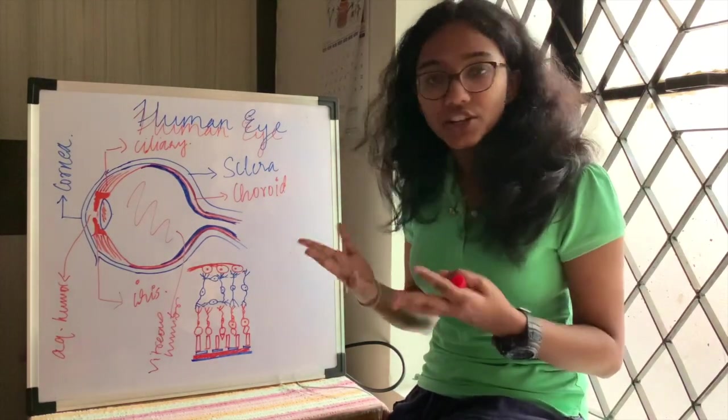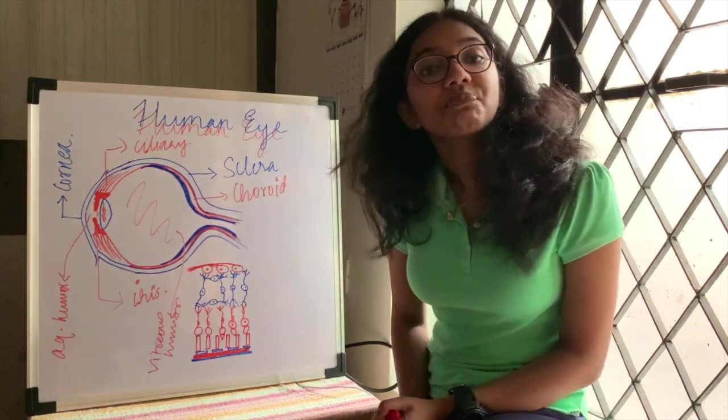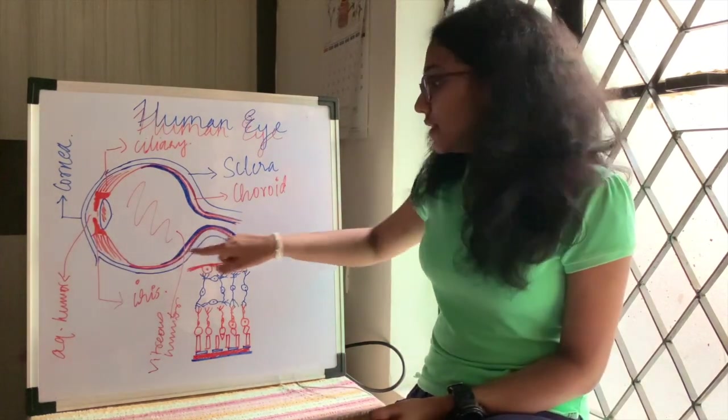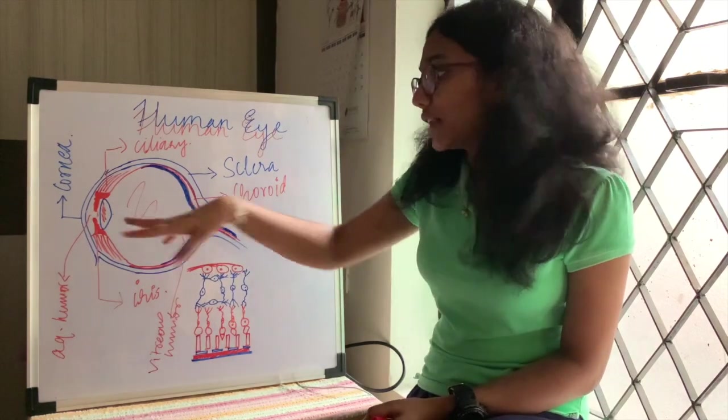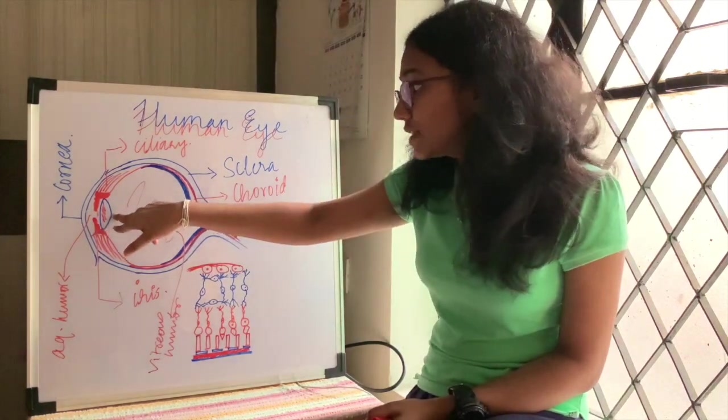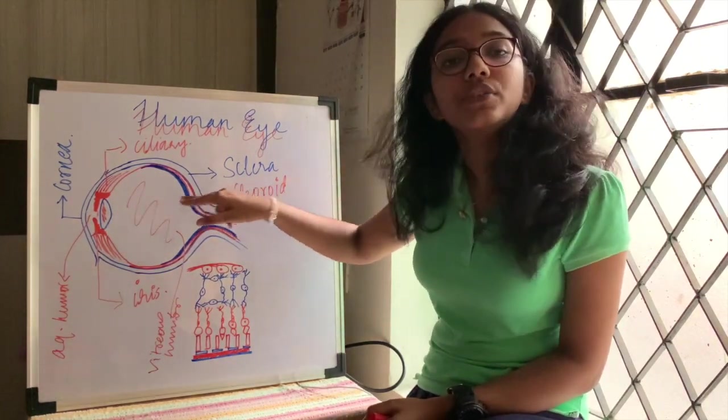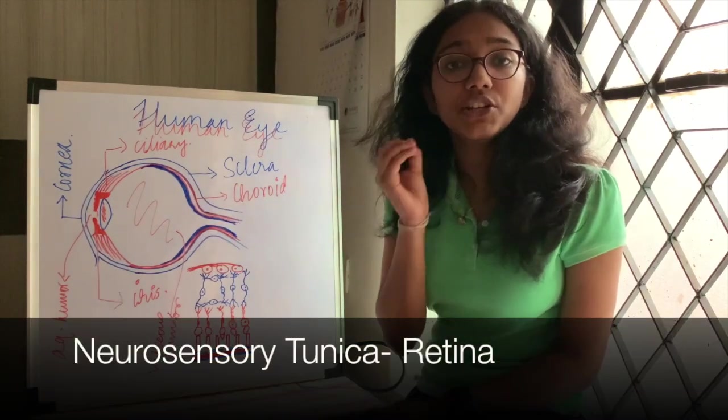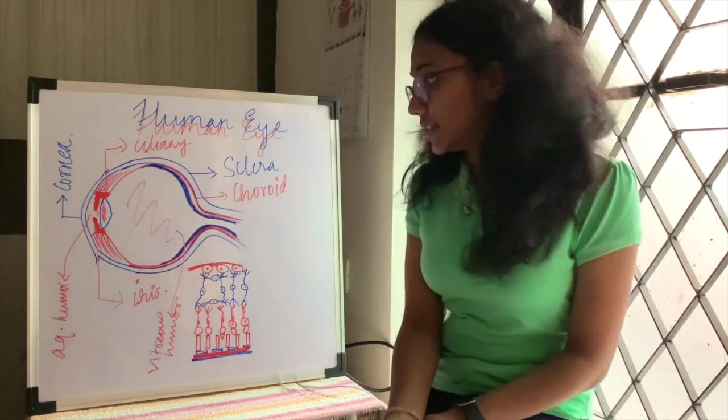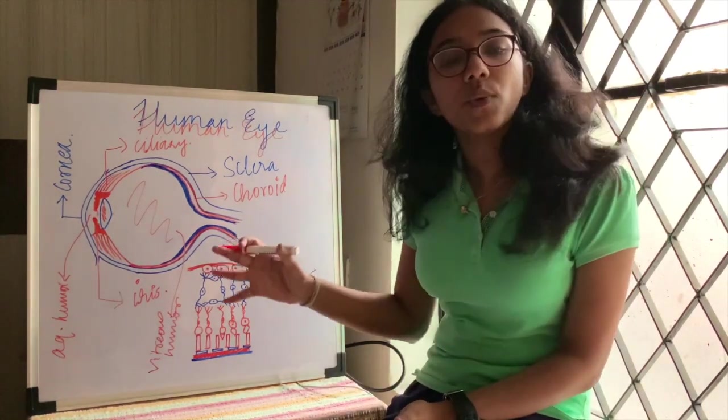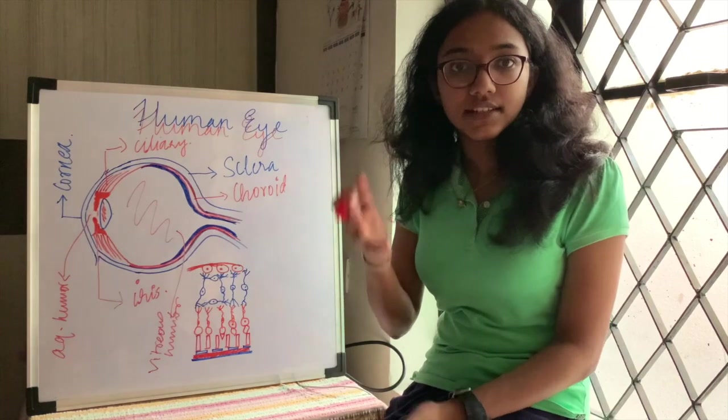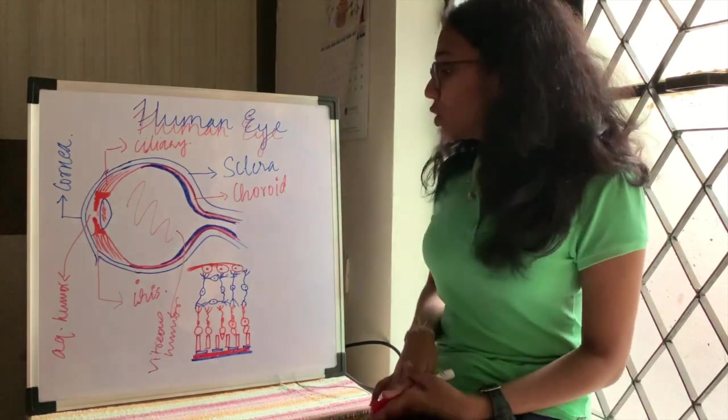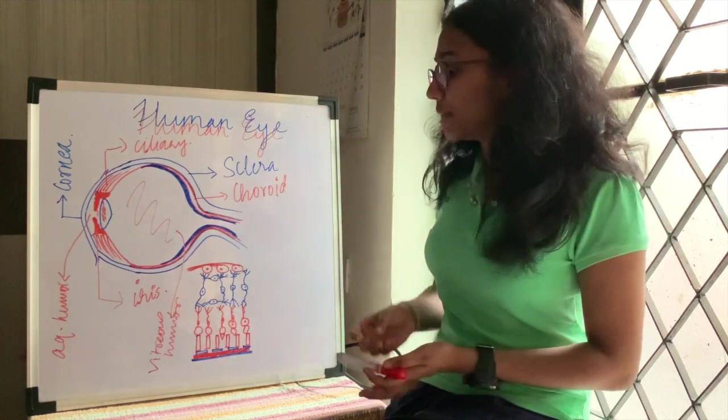Let's come to retina. Retina is the innermost layer. This layer that you see is retina, and light when it's refracted from the lens falls directly onto the retina. This retina is known as neurosensory tunica. It is called neurosensory because this layer is the one that converts the light signals into electric signals that are further taken into our brain. Let's look at the structure of the retina, which is very complex.